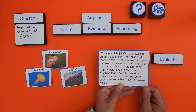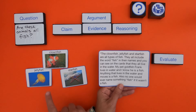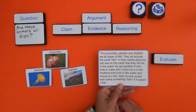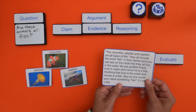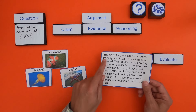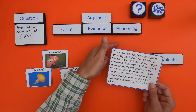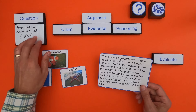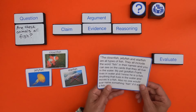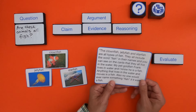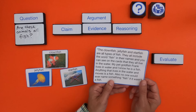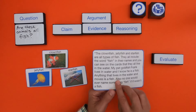They include the word fish in their name and you can see on the cards that they all live in water. My pet goldfish Frank lives in water and I know he is a fish. Anything that lives in water and moves is a fish. Also no one would ever name something fish if it wasn't a fish. So we want to pull out: what is their claim, what is their evidence, and what is their reasoning? The claim is just an answer to the question. The evidence is going to be all the observations — the facts they're laying forward — and then the reasoning will be a logical connection.